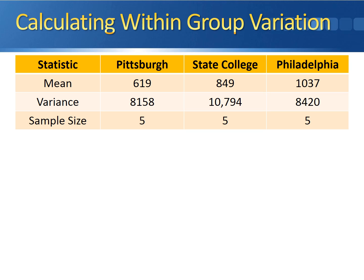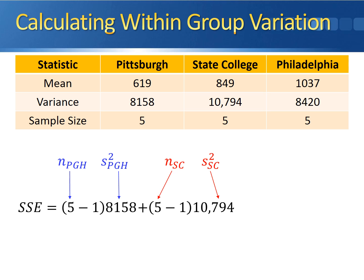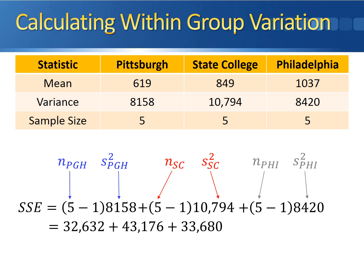The next step is to calculate the within-group variation, the SSE. The sums of squares due to the error also has three terms. The first term involving Pittsburgh is (5 minus 1) times the sample variance 8,158. The second term for State College is (5 minus 1) times 10,794. And the third term for Philadelphia is (5 minus 1) times 8,420. Working these out gives us 32,632 for Pittsburgh, 43,176 for State College, and 33,680 for Philadelphia. The sum of these three terms is 109,488.